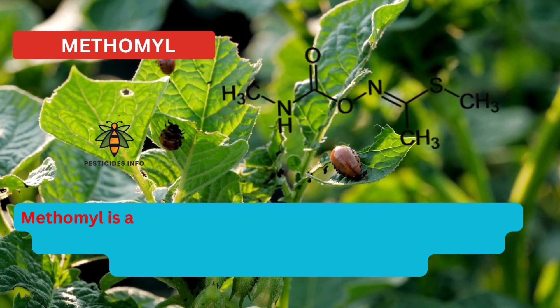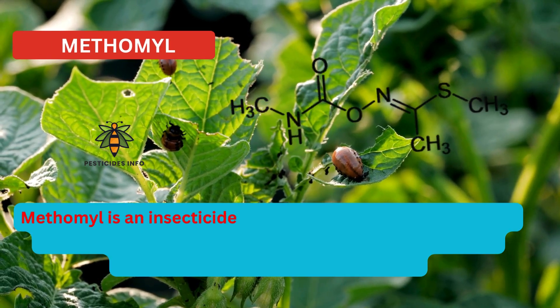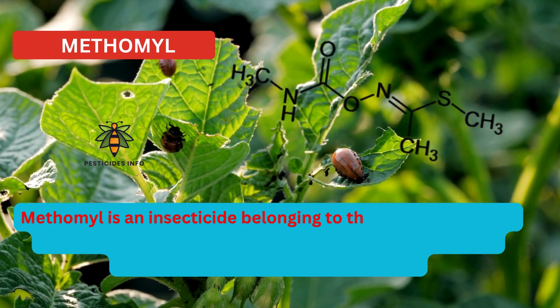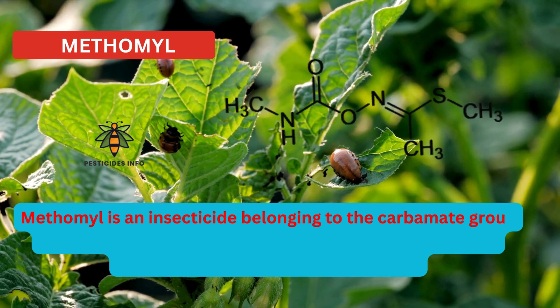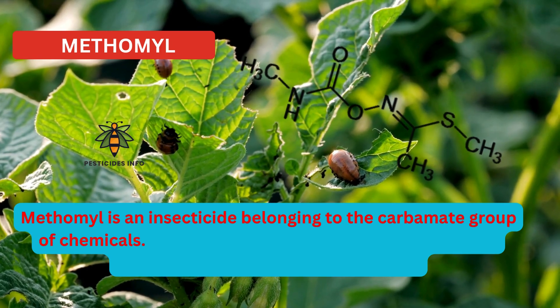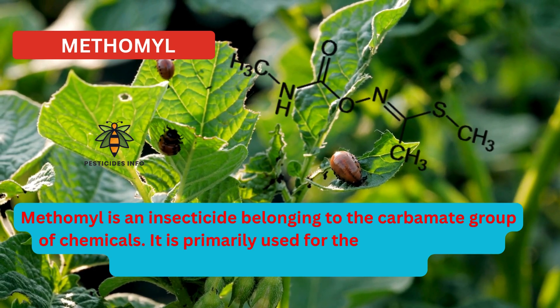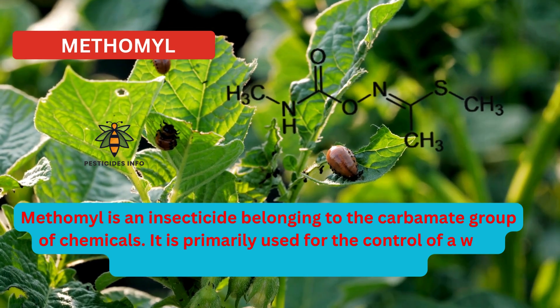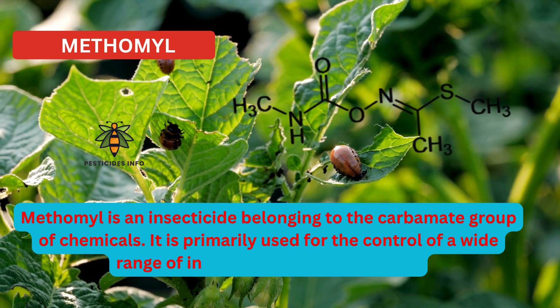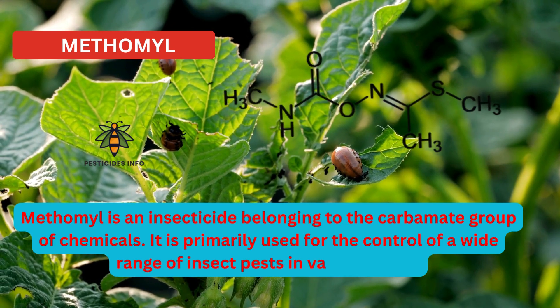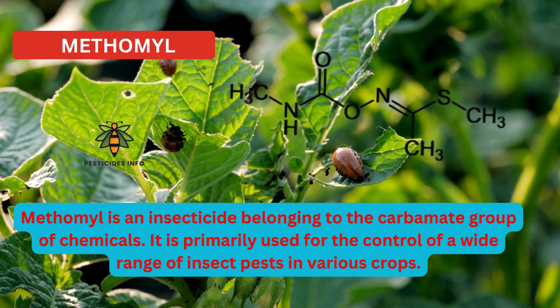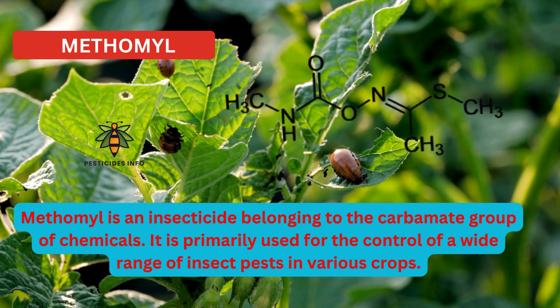Methomyl type. Methomyl is an insecticide belonging to the carbamate group of chemicals. It is primarily used for the control of a wide range of insect pests in various crops.